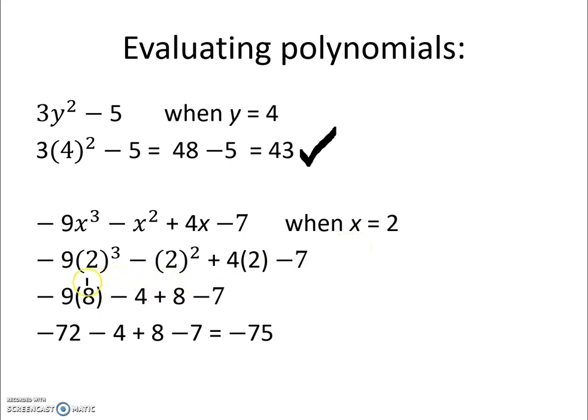Once again we just substitute that 2 in for x, and we have 2 cubed, which we know is 8. We have a negative 9 times that 8 for negative 72. We have 2 squared and a negative sitting out in front of it, which makes it a negative 4. And then we have plus 4 times 2, which is a positive 8. And we still have our negative 7.